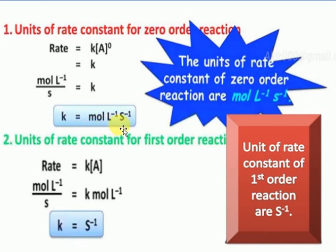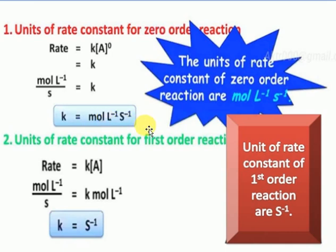Based on the units itself, we have to find the order of reactions. For example, whenever you see units with moles plus litres — litre minus litre cancels to zero — that means it is a zero-order reaction.